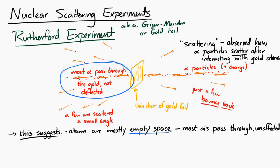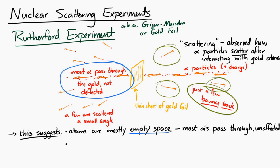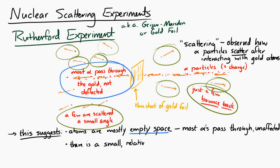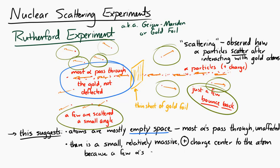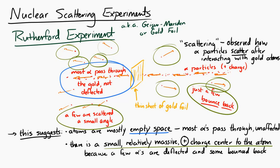But some of those alpha particles bounced back, and some were deflected. So that suggested that there is a very small but relatively massive and positively charged center to the atom. It had to be small because most of the alpha particles simply passed through. It had to be massive for the alpha particles to bounce off of it, and positively charged so that it would repel the positively charged alpha particles.